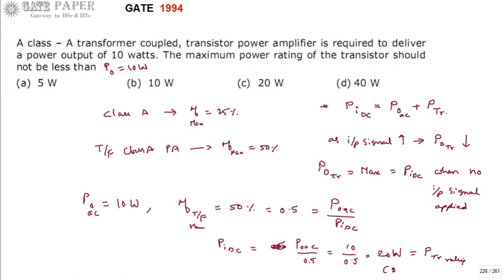Under zero signal condition, if you apply a sinusoidal input signal, at t = 0, t = π, and t = 2π the input signal value is zero — that is equal to a zero signal condition. When no signal is applied, the entire DC power dissipates across the transistor, and your power amplifier must not violate its operation — the transistor should not be destroyed. Therefore you must take the power rating of the transistor as a minimum equal to the DC input power in Class A power amplifiers.